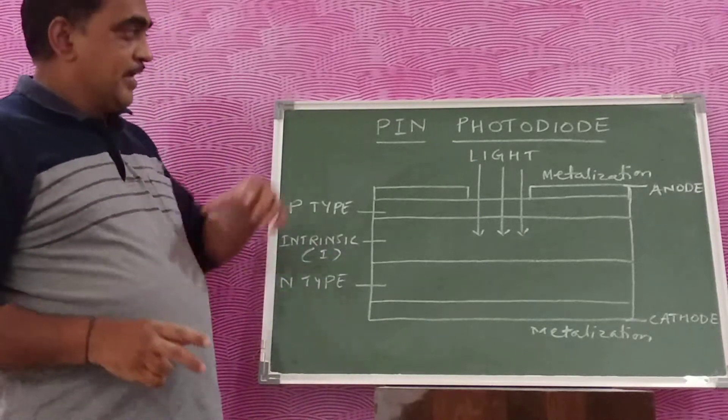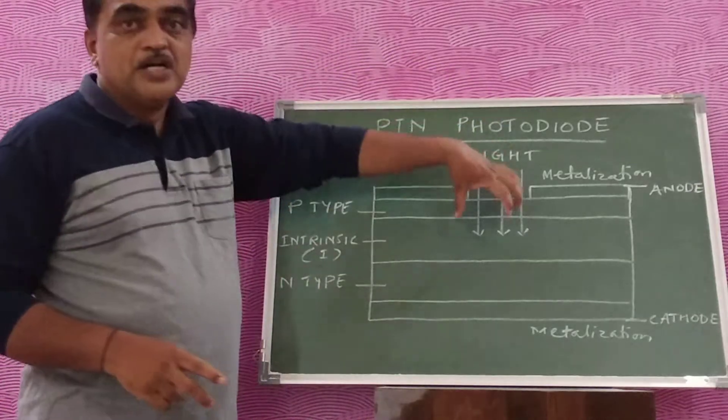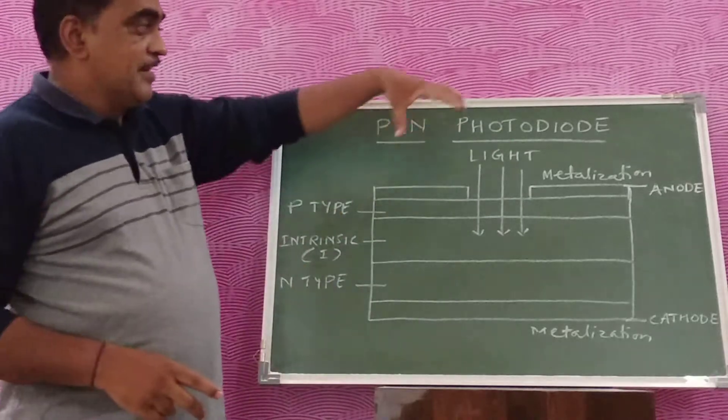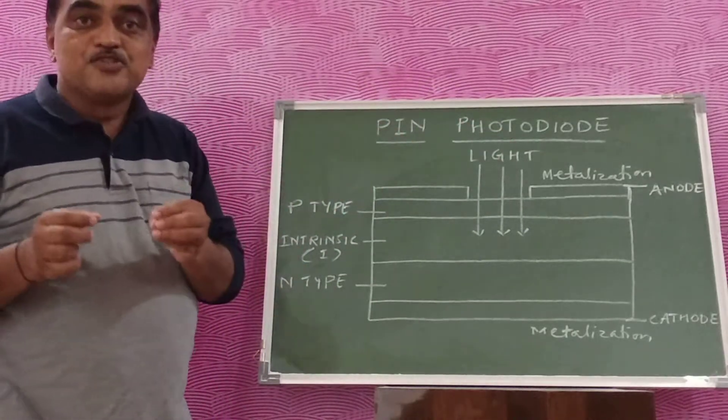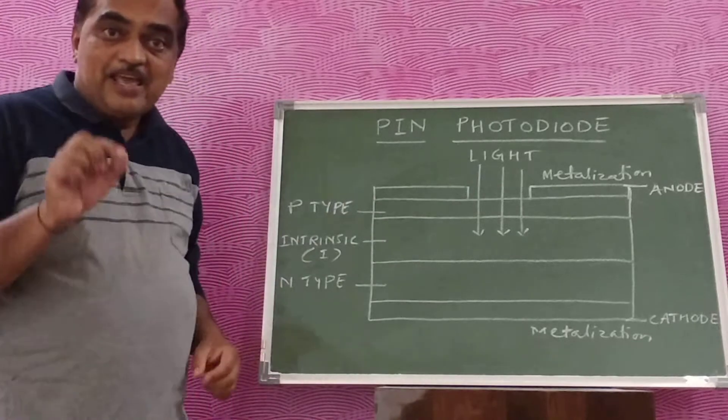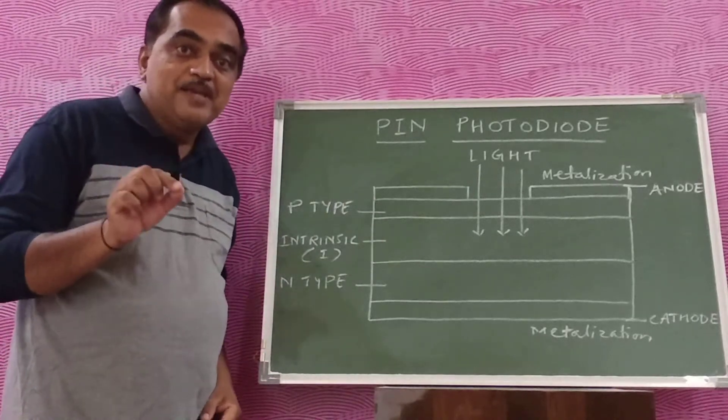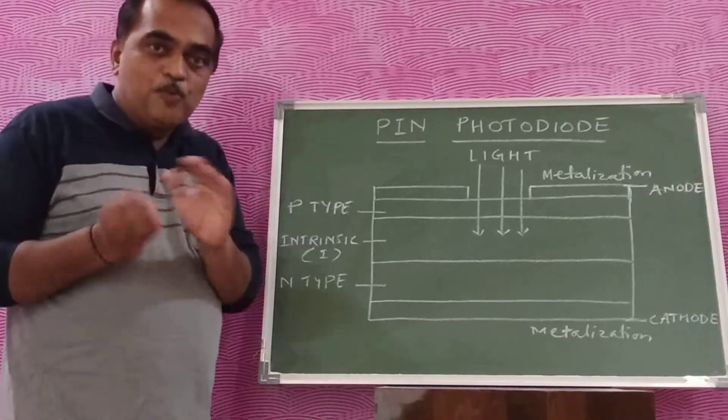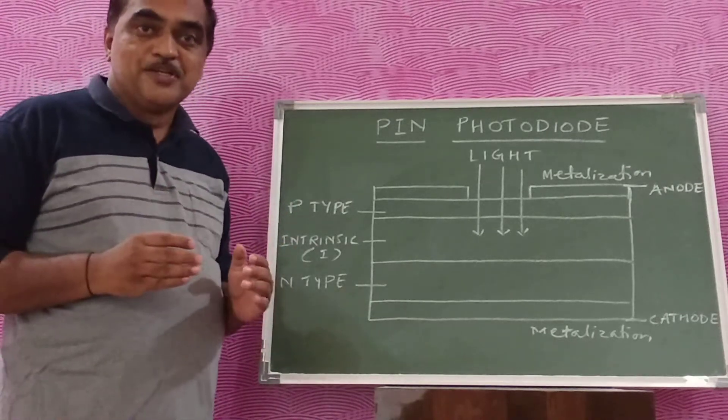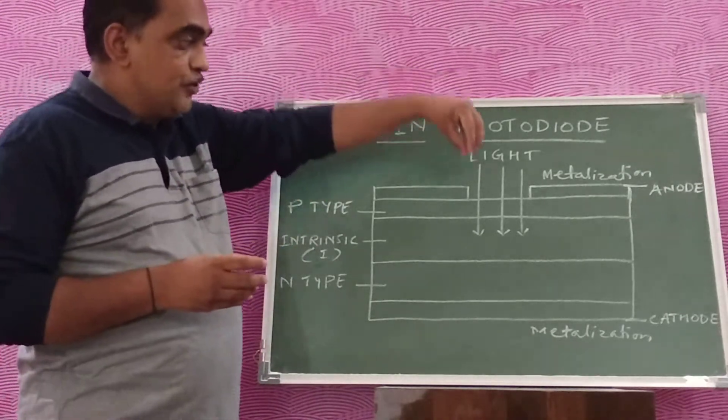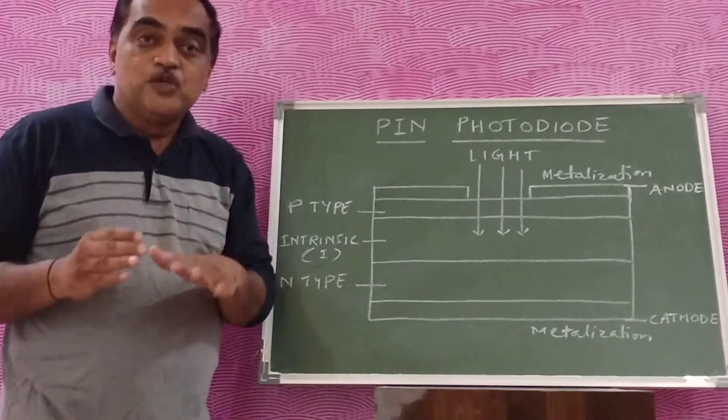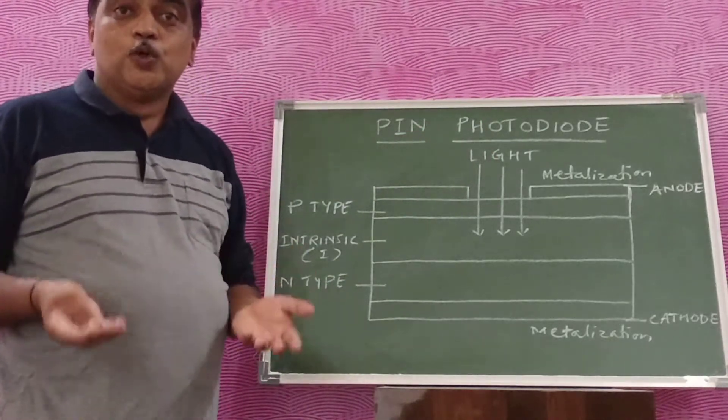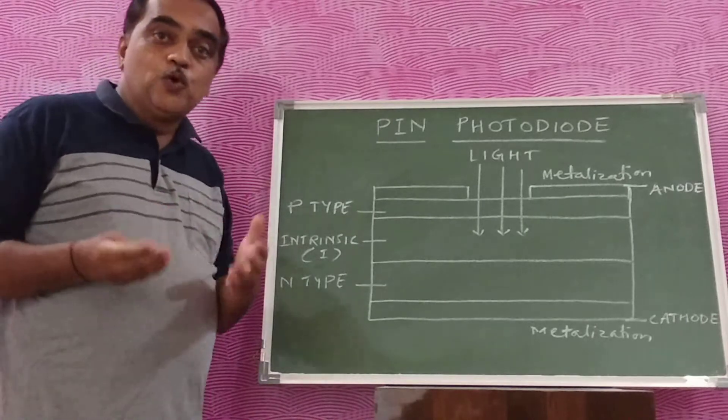If you make any light fall on the depletion layer—photons, elements of light—then every photon can make an electron-hole pair. It is just the opposite of spontaneous emission. So every photon falling on the depletion layer can give rise to an electron-hole pair.